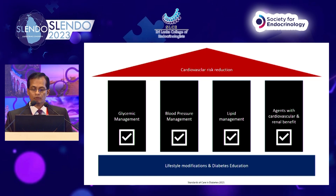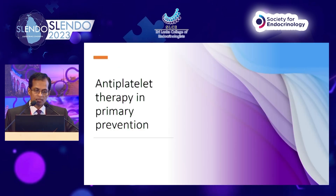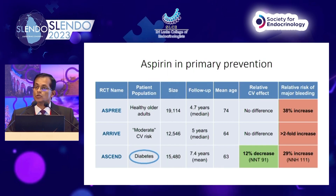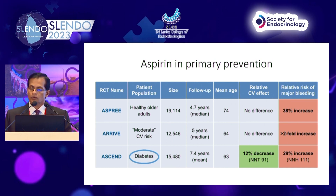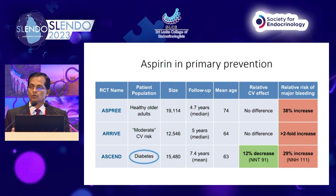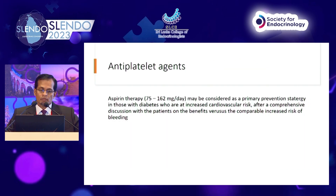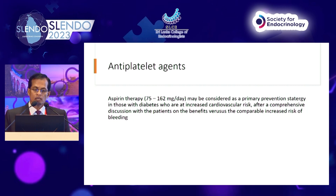A few words about antiplatelet therapy: secondary prevention is clear. For primary prevention, the ASCEND study with 15,000 diabetic patients showed a 12% relative reduction in cardiovascular outcomes, but the number needed to treat is 91, while the relative risk of major bleeding increased by 29% with a number needed to harm of 111 — a very close window. The guideline therefore says aspirin 75–160 mg may be considered for primary prevention in diabetes patients with increased cardiovascular risk after a comprehensive discussion with the patient.